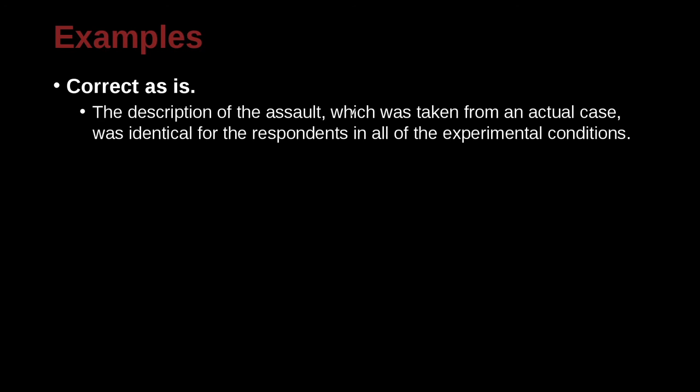The description of the assault which was taken from an actual case was identical for the respondents in all the experimental conditions. So here we have our comma and our conjunction which and a comma here. If we cut these out and we read the sentence again: The description of the assault was identical for the respondents in all the experimental conditions. That's fine and actually the sentence has very much the same idea. So we can do that. We can have two commas.